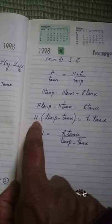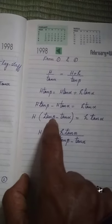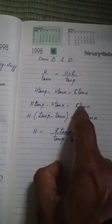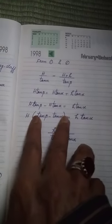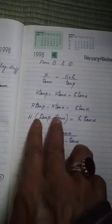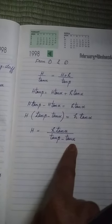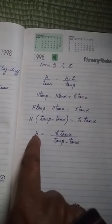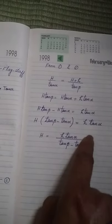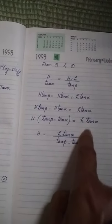So it will be taken as common. Inside we will have tan beta minus tan alpha, and right side we have h tan alpha. Now this is multiplied by H. So when it goes to right hand side, it will come in the denominator. And that is height of tower, and we wanted to prove that same.